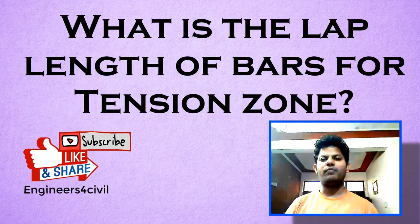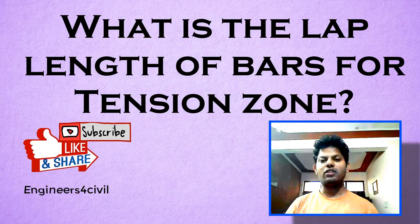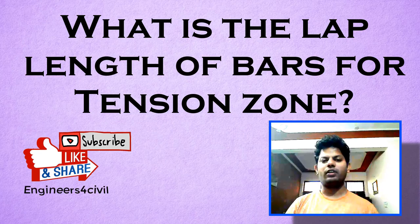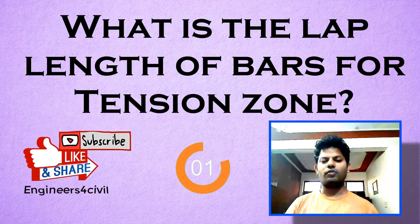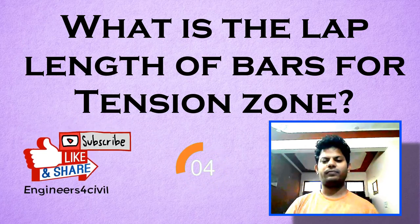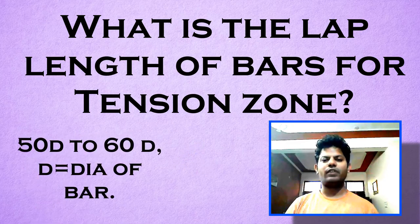What is the lap length of bar for tension zone? For tension zone, different from compression zone, we have five seconds to give the answer. The lap length is 50d to 60d, where d is equal to diameter of bar.